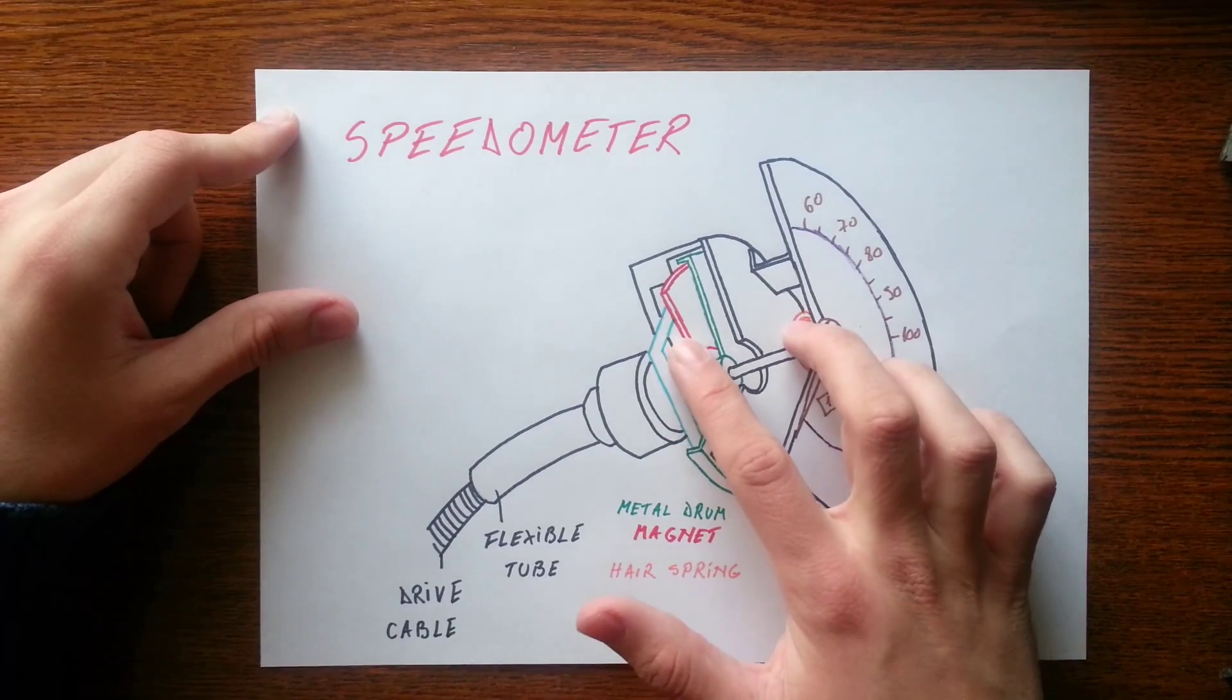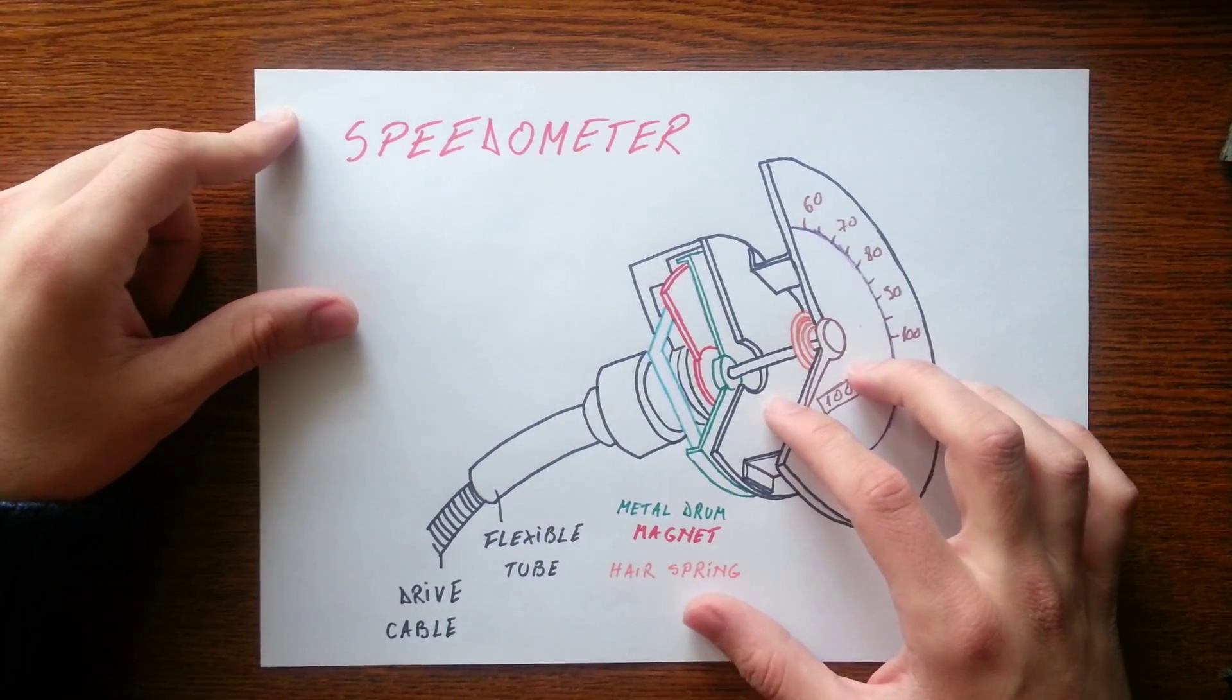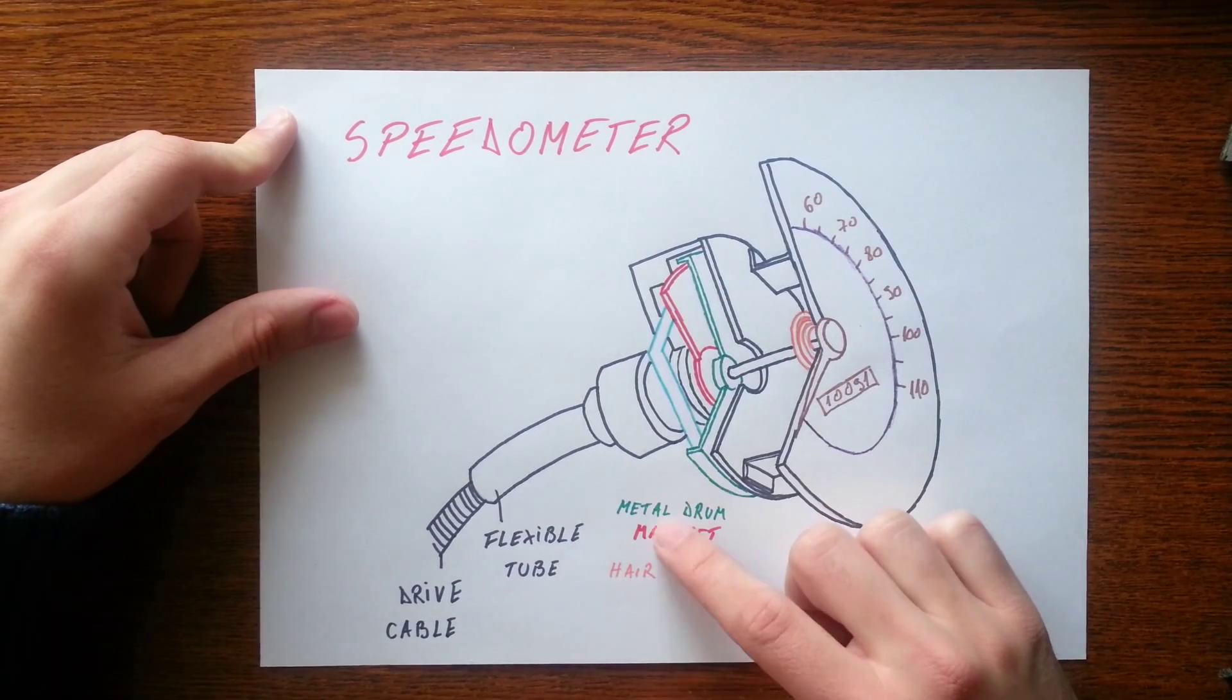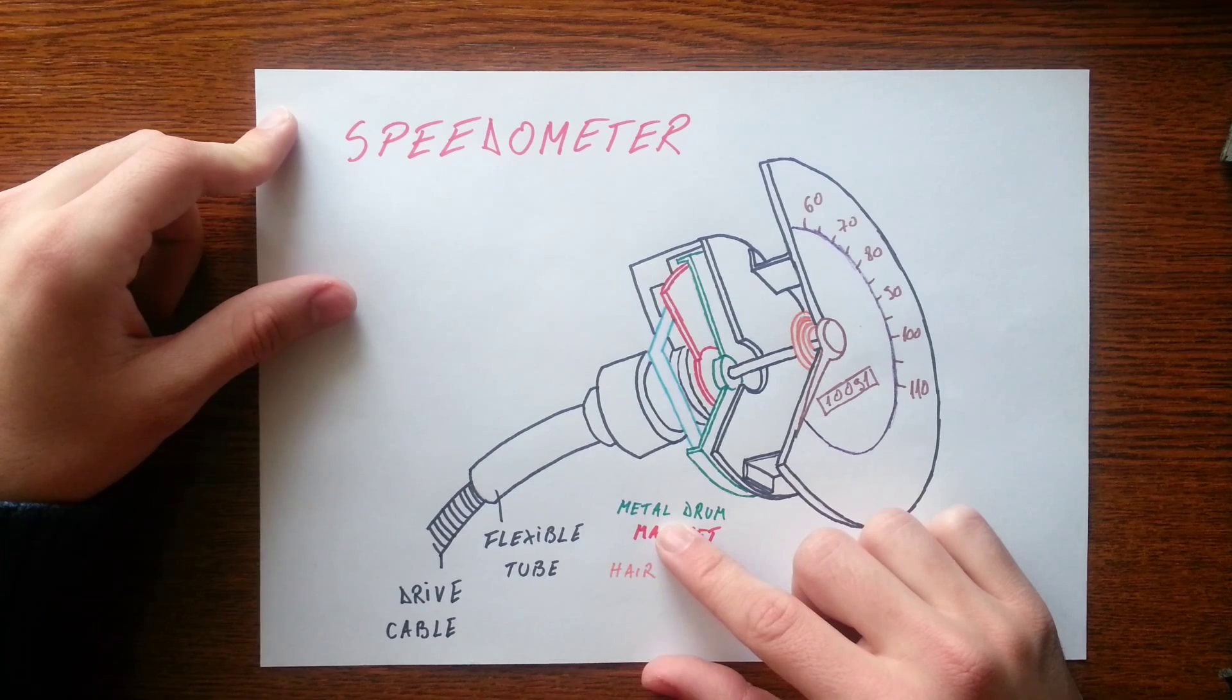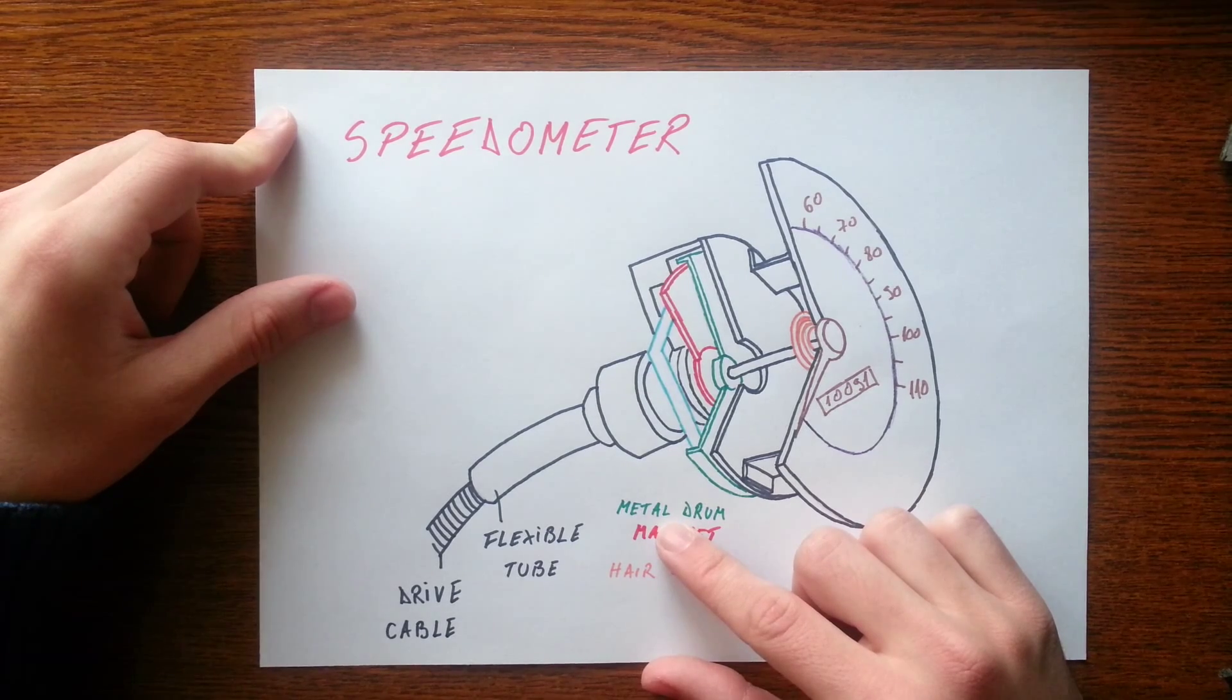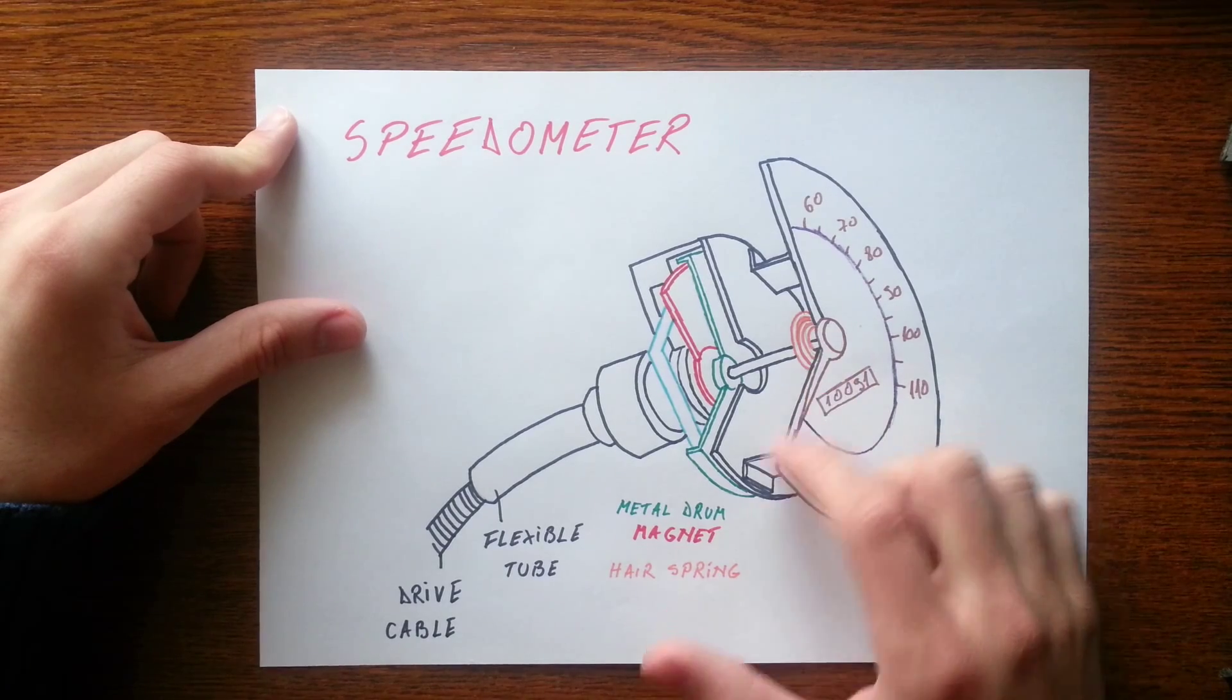The magnet rotates with the shaft, and its magnetic field attracts a metal drum to turn the speedometer needle against the force of a hairspring.